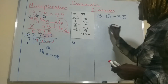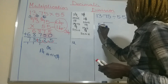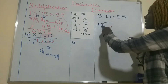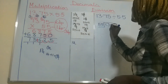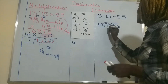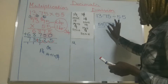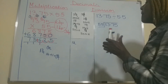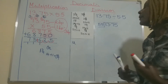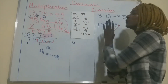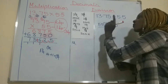First you set up the division: 5.5 is the divisor — it's the one that should go into that number — and 13.75 is inside. What we are going to do is make our divisor into a whole number; it should not be a decimal number. This means we are going to move one decimal place to the right so that we make it into a whole number.